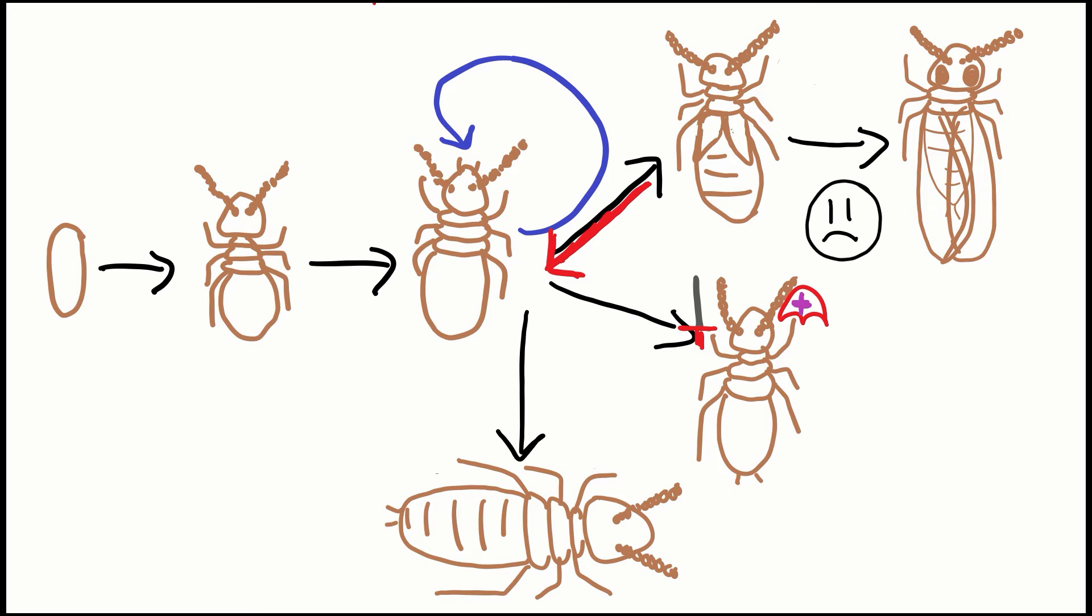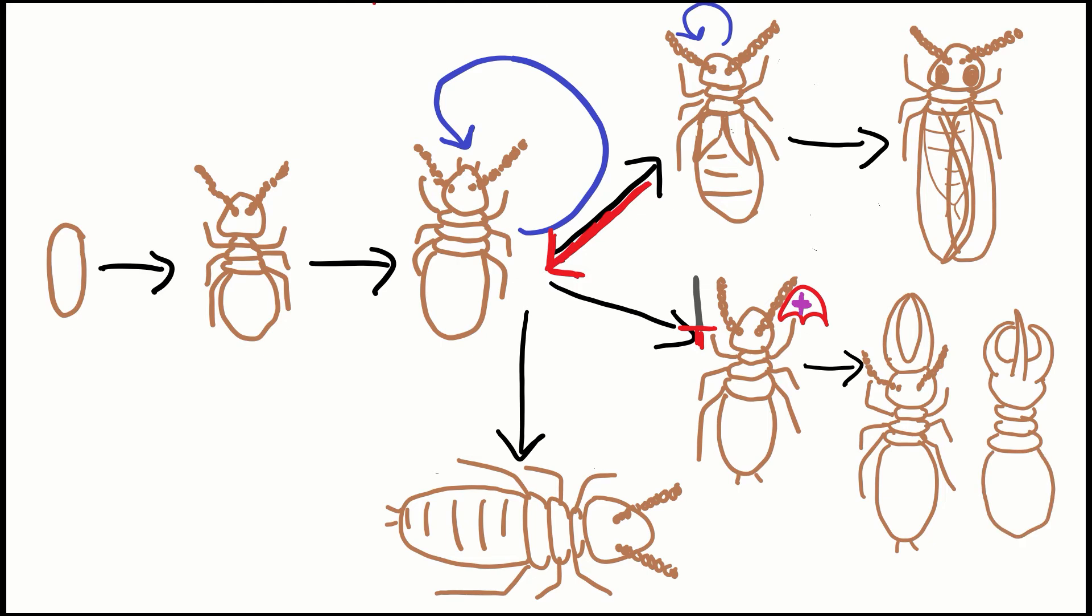If the termite starts the process as a pre-soldier nymph, it becomes sterile and will molt once more to gain the characteristics of the soldier for that colony. Different types of termites have different types of soldiers. Some soldiers have large, sclerotized heads with mandibles, and some have developed water-gun-like projections on their head to spray acid at opponents. These are called nesuits.